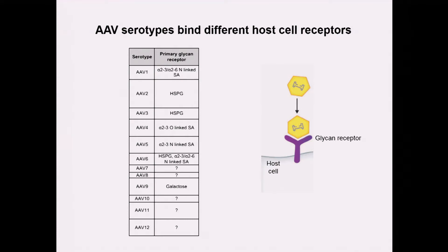AAVs are kind of special — they come in different flavors, meaning different serotypes, AAV1 through 12 and a few more. The interesting thing about these serotypes is that what differs between them is not the transgene but the capsid amino acid constitution. These differences change the interaction of the AAV with a glycan receptor on the host cell surface. For example, AAV2 will bind HSPG, which you find a lot on the liver. AAV9s can bind galactose, which you find on brain endothelial cells, meaning AAV9 is much better at crossing the blood-brain barrier. You can also redesign the AAV capsid to have tropism for a particular cell population.